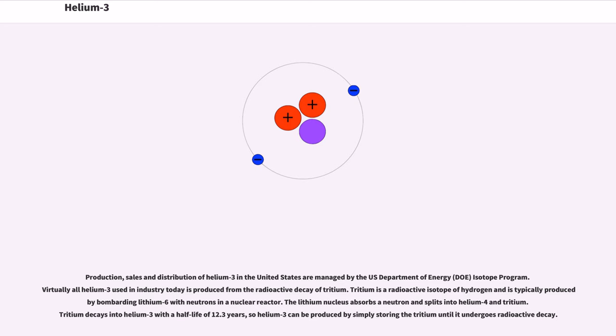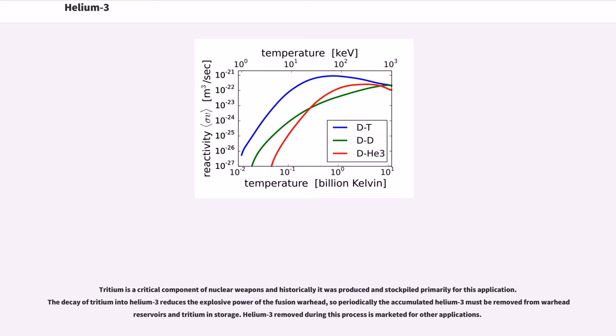Production, sales and distribution of helium-3 in the United States are managed by the U.S. Department of Energy, DOE, isotope program. Virtually all helium-3 used in industry today is produced from the radioactive decay of tritium. Tritium is a radioactive isotope of hydrogen and is typically produced by bombarding lithium-6 with neutrons in a nuclear reactor. The lithium nucleus absorbs a neutron and splits into helium-4 and tritium. Tritium decays into helium-3 with a half-life of 12.3 years, so helium-3 can be produced by simply storing the tritium until it undergoes radioactive decay. Tritium is a critical component of nuclear weapons and historically it was produced and stockpiled primarily for this application. The decay of tritium into helium-3 reduces the explosive power of the fusion warhead, so periodically the accumulated helium-3 must be removed from warhead reservoirs and tritium in storage. Helium-3 removed during this process is marketed for other applications.